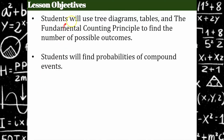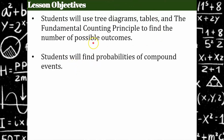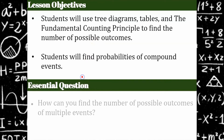Today our objectives are to use tree diagrams, tables, and the fundamental counting principle to find the number of possible outcomes. And then students will find the probabilities of compound events using the results of this. So our question for today is: how can you find the number of possible outcomes of multiple events?